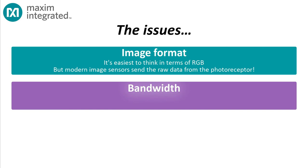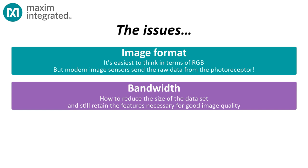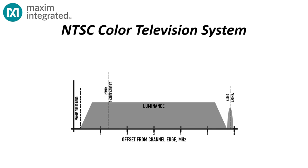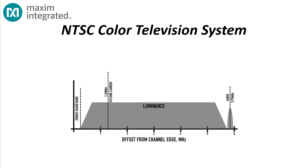The second issue is bandwidth. We saw before how a simple HD signal can balloon into gigabits per second of data. The question is, how would one reduce the overall bandwidth required by the video signal without seriously impacting the video quality? Back in the 1940s, engineers working on the first all-electronic color television systems were faced with the same question: how do you fit color information into a channel just 4.5 MHz wide, designed for a black-and-white, luminance-only picture?